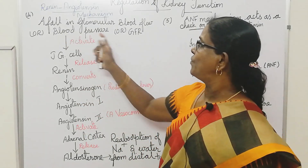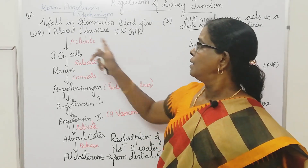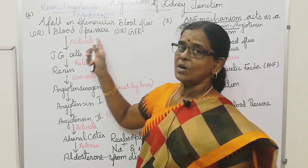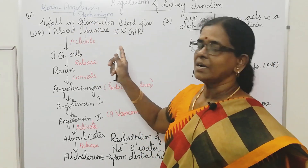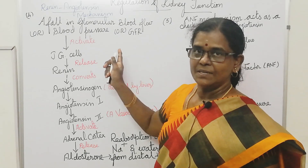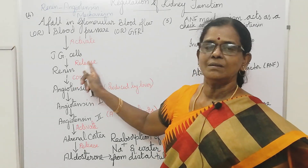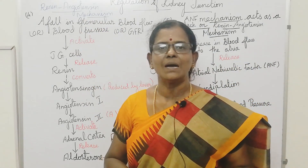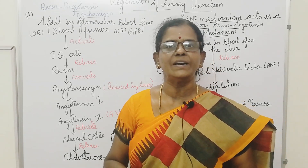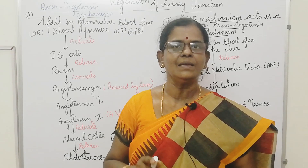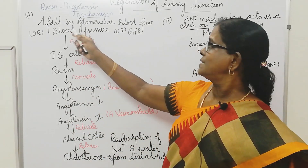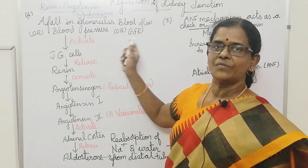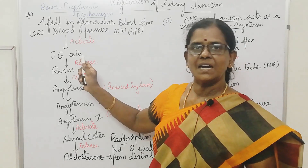If there is a fall in glomerular blood flow, or blood pressure, or glomerular filtrate rate, this can activate juxtaglomerular cells. In the renin-angiotensin mechanism, the juxtaglomerular apparatus plays a complex regulatory role. When there is a fall in glomerular blood flow, blood pressure, or glomerular filtrate rate, it can activate the juxtaglomerular cells.